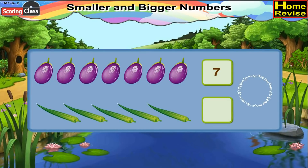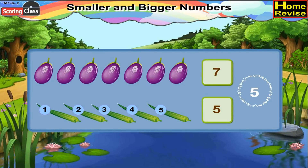Lady fingers: 1, 2, 3, 4, 5 lady fingers. So write 5 in the box. Now, is 7 smaller or 5? Yes, it is 5. So write 5 in the circle.